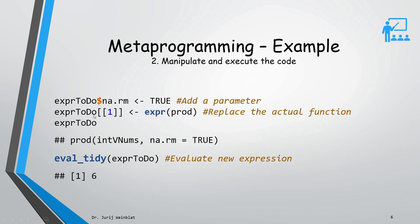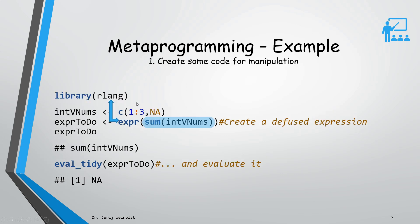Now we can evaluate or execute the modified source code, the modified expression. The result is now 6, which makes sense because 1 multiplied by 2 is 2, 2 multiplied by 3 is 6, and NA is thrown away because of na.rm.